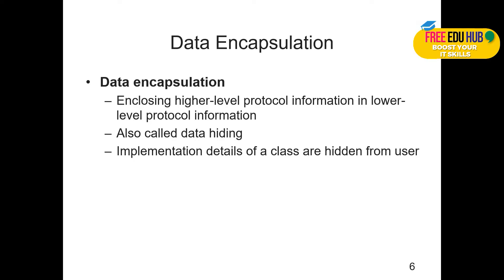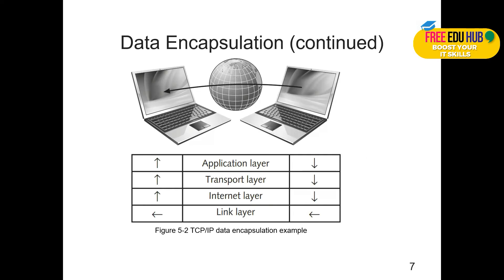Data encapsulation means enclosing higher-level protocol information within lower-level protocol information — Layer 1, Layer 2, Layer 3, Layer 4 — each adding its own header until it reaches the seventh layer. It is also called data hiding, where implementation details are hidden from the user. In the TCP/IP model, a packet goes from the application layer to the transport layer, then to the network layer, forming a complete data frame containing the IP address, MAC address, and all relevant destination details.